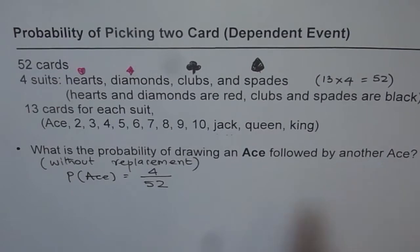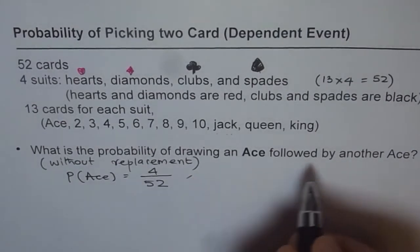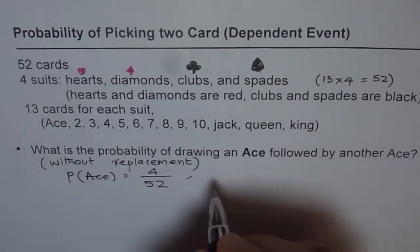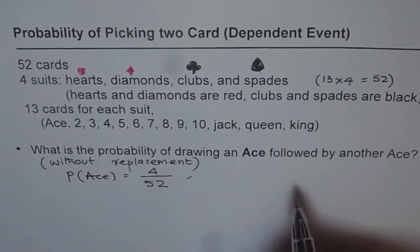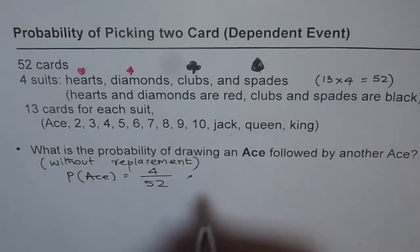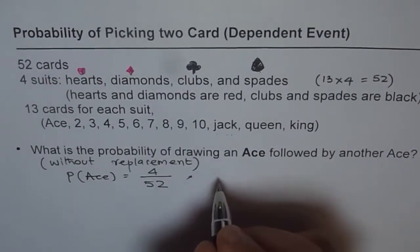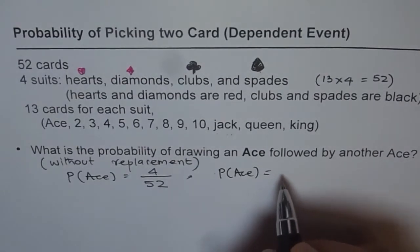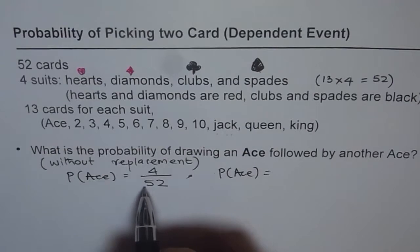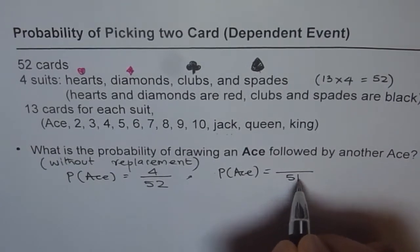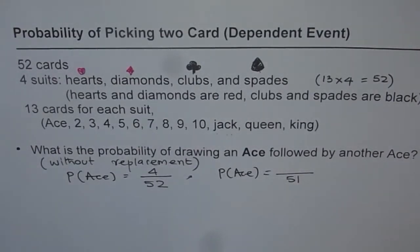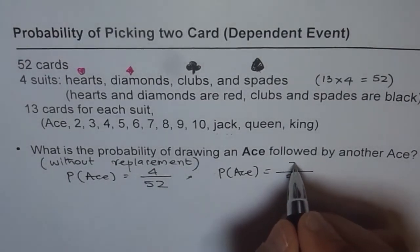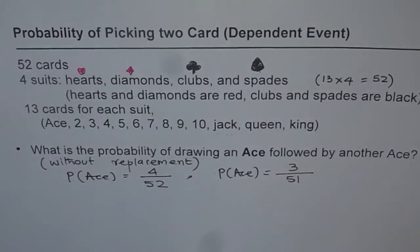Now, what is the probability of drawing another ace in the subsequent draw without replacement? We have drawn one card, so in the deck we don't have 52 cards anymore — we have 51 cards. And how about the number of aces? Since we have drawn one, we are left with 3. So it is 3 over 51. That is how it changes.